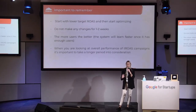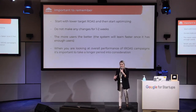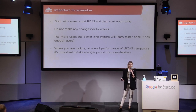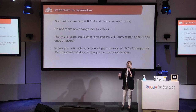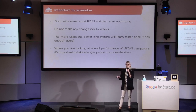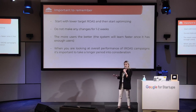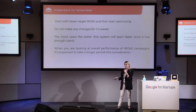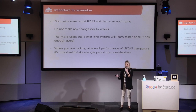What else is important to remember: in our own examples, we usually start with a lower target ROAS, and then after a week or two, we start optimizing. Of course, the more users, the better — the system will learn faster once it has enough users. And lastly, when you are looking at the overall performance of ROAS ad campaigns, it's important to take a longer period into consideration. For example, if you set your ROAS at 100%, one day you might see it at 80%, the next day at 120%. The same goes for budget — one day your campaign will not spend the whole daily budget, the next day it will spend twice as much. So when you optimize, try to look at it on a monthly basis.